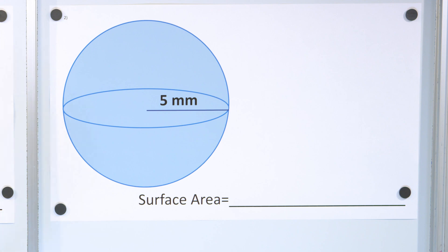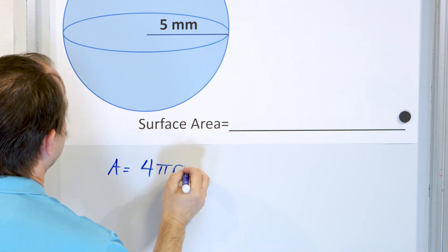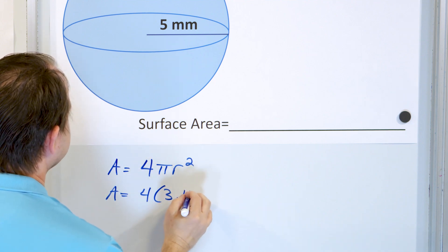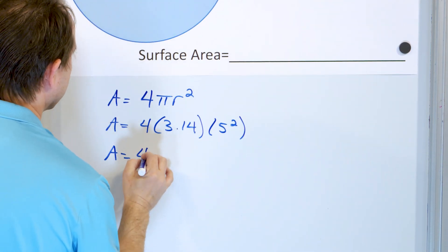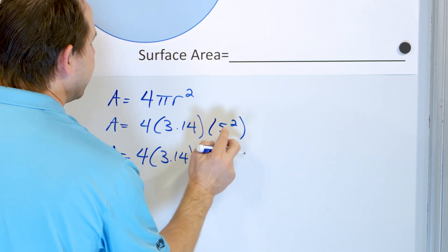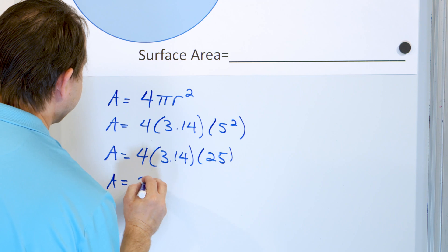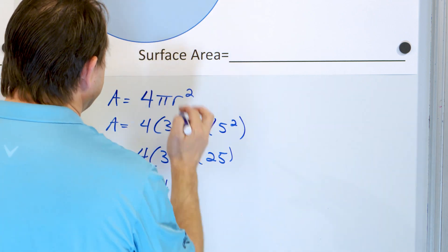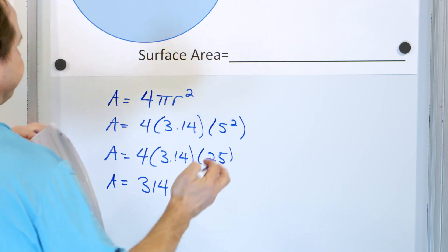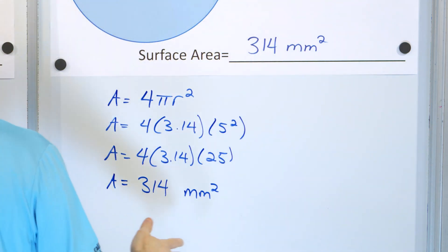Let's get some more practice with problem number two. This is a sphere with a radius from the center to the edge of five. So the area is four times pi r squared — four times 3.14 times the radius, which is five, squared. Five times five is 25. If you take 25 times four, that's 100, and 100 times 3.14 — just moving the decimal two spots — gives you 314. The units are in millimeters, so this is 314 square millimeters.